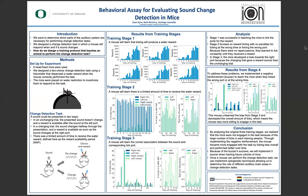By analyzing what the mice had learned, I was able to implement a new stage that taught the mice to engage with the task more and learn the change detection task. With the success of the buzzer, I plan to implement it sooner with future cohorts of mice. And once a mouse is able to perform the change detection task, I will be able to implement optogenetic techniques, allowing us to determine the role of different auditory brain areas in change detection tasks. Thank you.